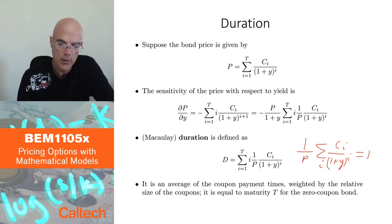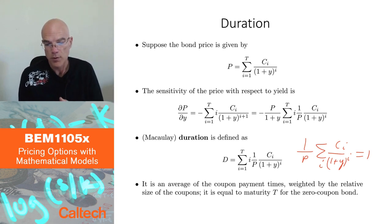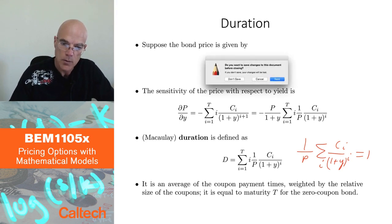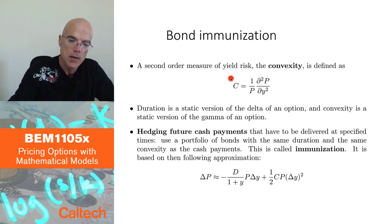Now, if you want to be even more careful and hedge even more precisely, you may want to also look at the second order sensitivity and choose your bonds, your bond portfolio in such a way that both your first order sensitivity of the portfolio of liabilities and bonds together, and the second order sensitivity, they're both zero. To do that, we have to take the second derivative, and that's what's called convexity. So convexity is simply the second derivative of the bond price with respect to yield normalized by the bond price, one over P.